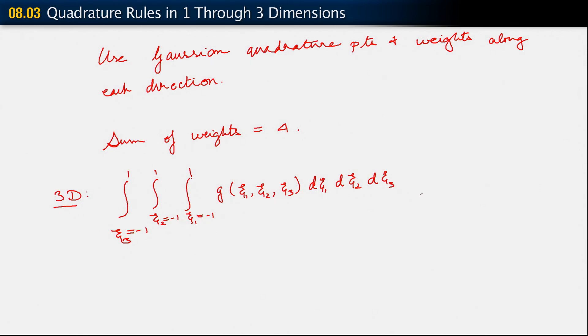I'm straight away going to just write out the formula. Our numerical quadrature formula is sum L3 equals 1 to n3 int, number of integration points in that ξ3 direction. L2 equals 1 to number of integration points in the ξ2 direction. L1 equals 1 to number of integration points in the ξ1 direction. G, ξ1 L1, ξ2 L2, ξ3 L3, times WL1, WL2, WL3.